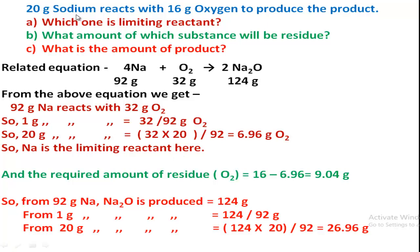So the answer to the first question is: sodium is the limiting reactant. The required residue of oxygen: 16 grams minus 6.96 grams equals 9.04 grams. Now from the limiting reactant: from 92 grams of sodium, 124 grams of sodium oxide is produced, so from 20 grams of sodium we get 26.96 grams of sodium oxide.